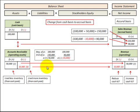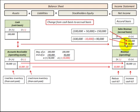Now looking at the case where our accounts receivable decreases by ten thousand dollars for the year, our revenue would have decreased by ten thousand dollars. We subtract this reduction in revenue of ten thousand dollars from the cash received of a hundred thousand dollars, and our sales revenue on the accrual basis would be ninety thousand dollars.